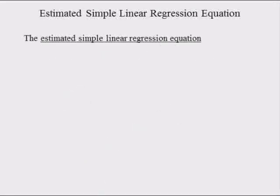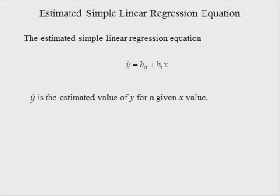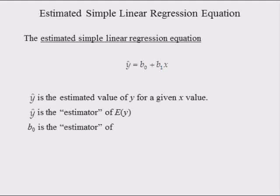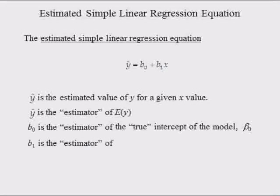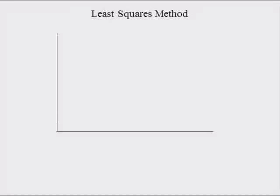The estimated simple linear regression equation is y-hat equal to b0 plus b1 times x, where y-hat is the estimate of y for a given value of variable x. We could say y-hat is the estimate of the expected value of y for a given value of x. b0 is the estimator of the true intercept beta 0, and b1 is the estimator of the true slope beta 1. The least squares method is used to compute estimates of the slope and intercept parameters beta 1 and beta 0.